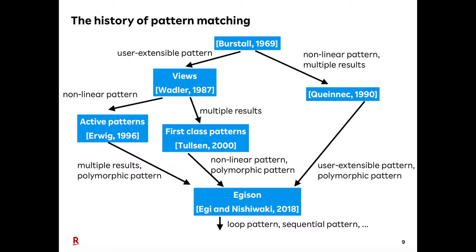This diagram shows the history of pattern-matching. After Burstall invented pattern-matching for algebraic data types, typical pattern-match extensions were proposed. User-extensibility of patterns is a feature that allows users to customize pattern-match algorithms. Non-linear patterns allow multiple occurrences of the same variable in the pattern. Pattern-matching with multiple results is an important feature for handling non-free data types such as math sets. EGISON appears as the pattern-match system that combines all three of these features.